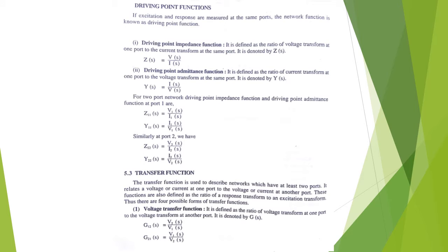In network functions we have different types. First, we have the driving point function, which includes the driving point impedance function defined as the ratio of voltage transform at one port to the current transform at the same port. Similarly, the driving point admittance function is the ratio of current transform at one port to the voltage transform at the same port. These two definitions are for the single-port network.